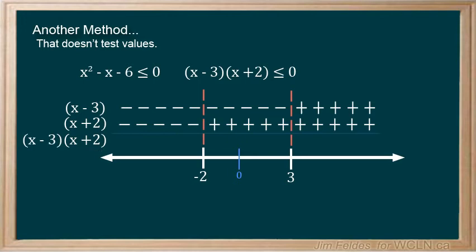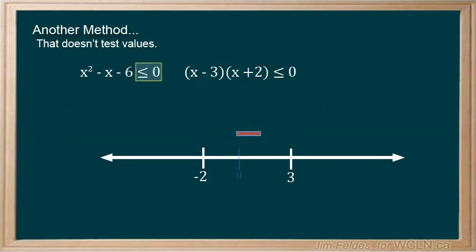If we look only at the signs for the product, we can see once again positive, negative, negative, positive. The inequality is less than or equal to, so we include the roots and only the interval where we have a negative product.